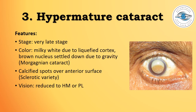Hypermature cataract is a very late stage which occurs when immature or mature cataract are not treated in time. The color in the superior part is milky white due to liquefied cortex, and usually the brown nucleus is settled down due to gravity — as seen in this photograph showing Morgagnian cataract. Sometimes calcified spots over the anterior lens surface are visible in the sclerotic variety of hypermature cataract, and vision is usually reduced to hand movement or perception of light.